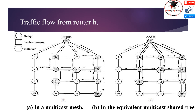Keeping branch information updated is an extra challenge for tree-based protocols in mobility scenarios. Because a member router of a multicast mesh has redundant paths to any other router in the same mesh, topology changes are less likely to disrupt the flow of multicast data or require the reconstruction of routing structures that support packet forwarding.